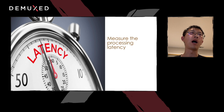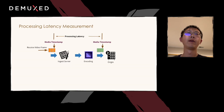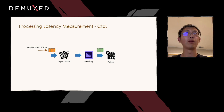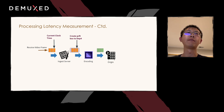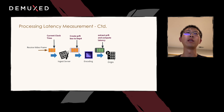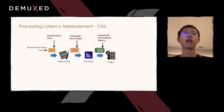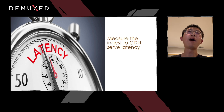First, we are going to talk about how we measure the processing latency. The processing latency measures the latency of the video frame going through the ingestion all the way to the origin server. The idea behind this is to manipulate the media box to carry the clock time through the ingest to the encoding. When the video frame arrives at the ingest, we note down the clock time and package it in the PRFT box for the fragment mp4. We keep the PRFT box through the encoding process. When we put the transcoded fragment mp4 into a serving manifest, we extract the PRFT box and compute the latency with the current clock. So we have the processing latency measured.